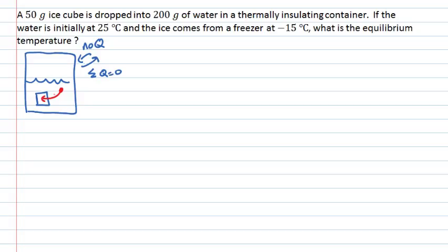In order to do this, we need to consider a few possibilities. The easiest possibility would be that the equilibrium temperature is zero degrees Celsius. That would mean the heat that comes out of the water at 25 degrees Celsius is insufficient to warm up the ice from minus 15 to zero and to melt the ice completely. If it can't melt the ice completely, we must end up with an ice-water mixture, which has a temperature of zero degrees. So let's look at the heats required for those processes.